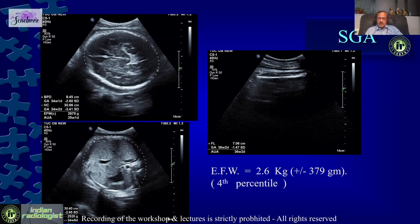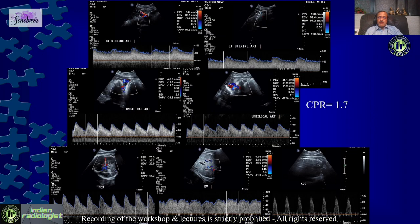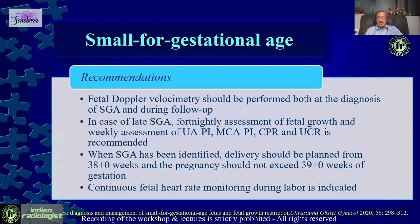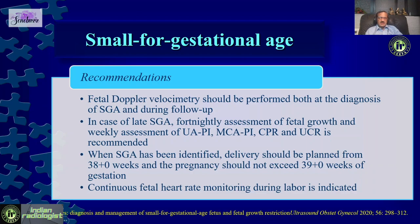Here is an example: a fetus at the 4th percentile — less than the 10th percentile — but with normal Doppler, CPR, and everything else. We label this as a small for gestational age fetus. What do we do in an SGA fetus? We need to keep a watch — we can't leave it alone. We try to deliver at around 38 weeks, and not beyond 39 weeks. Most SGA fetuses do well. We need to follow them fortnightly with all Doppler parameters, but some could have problems during labor, so we need to keep a close watch.